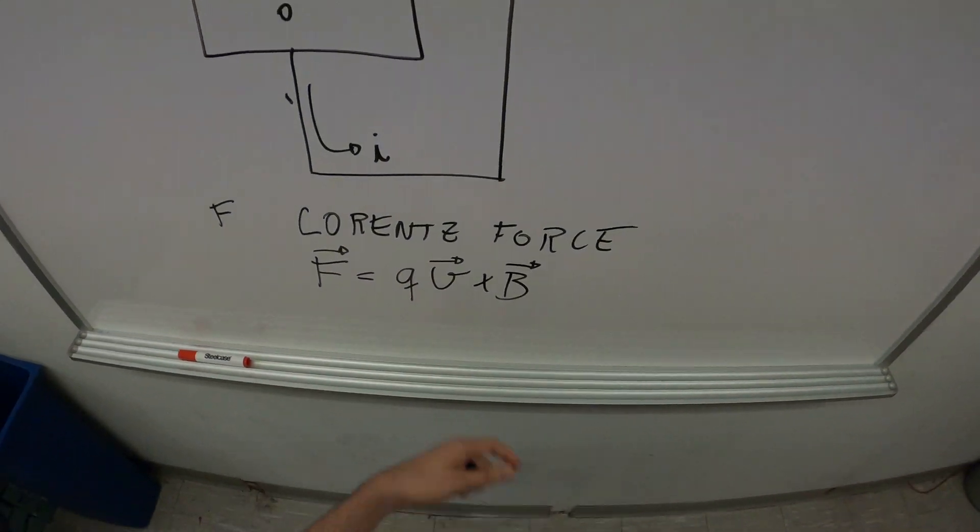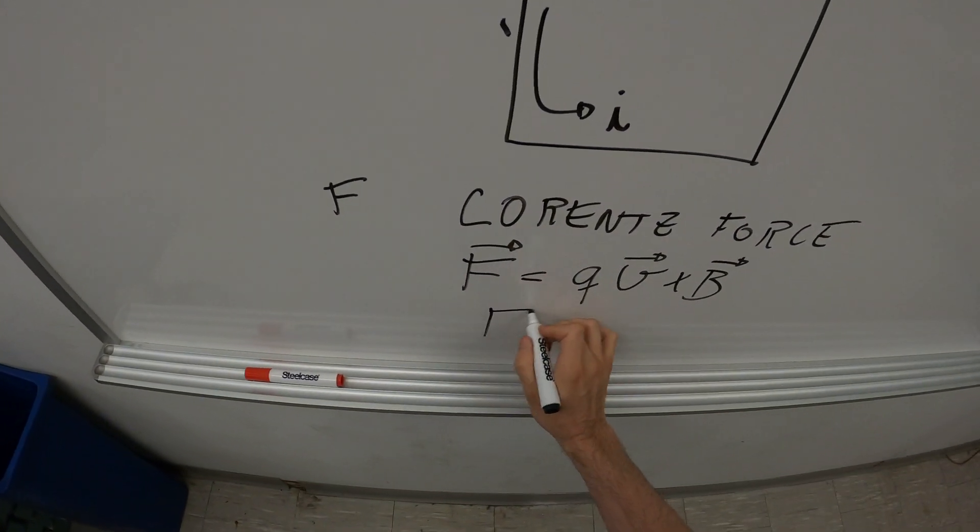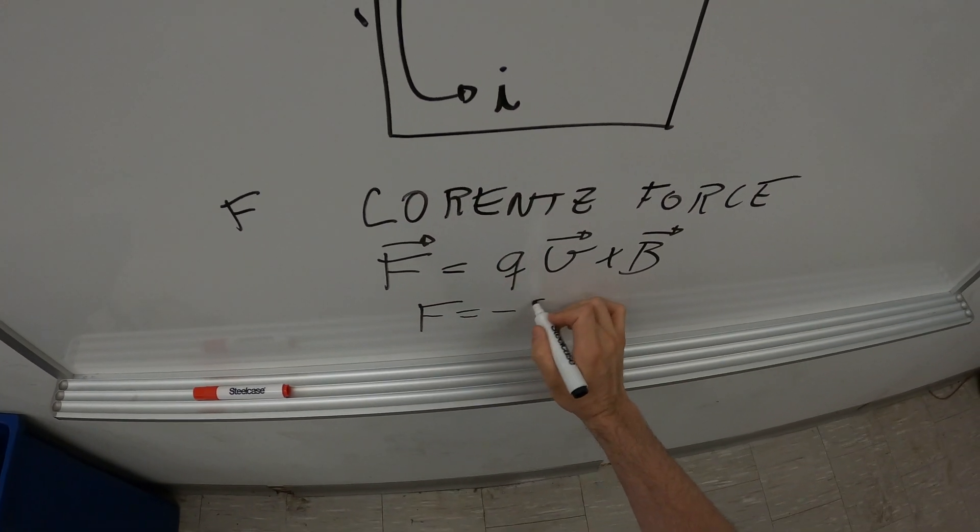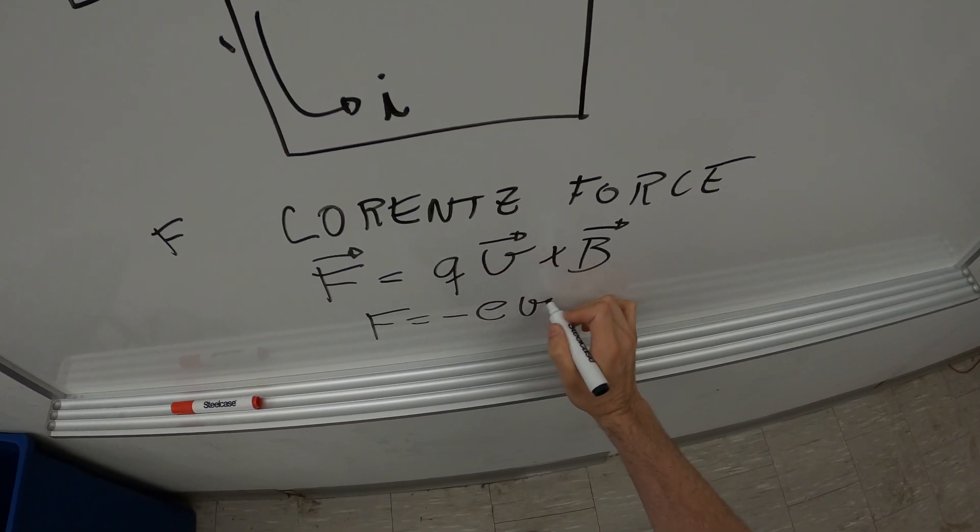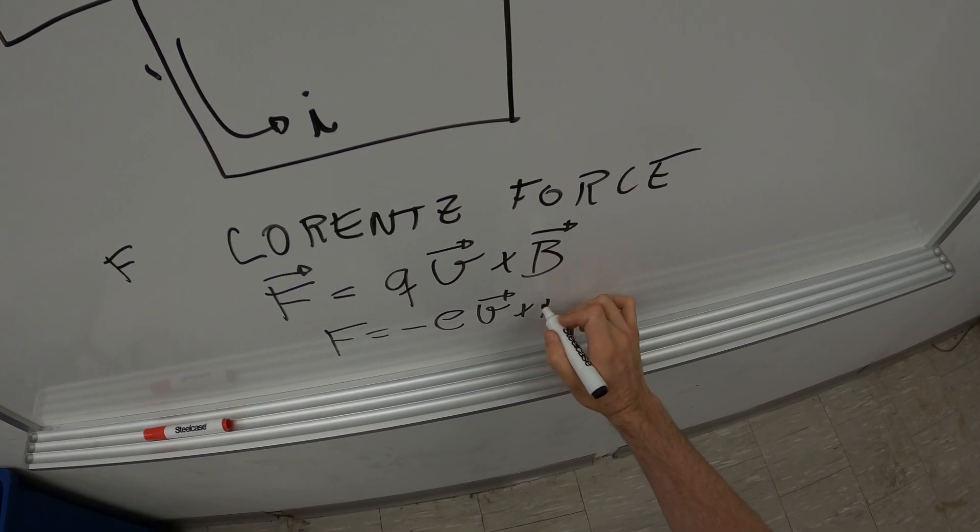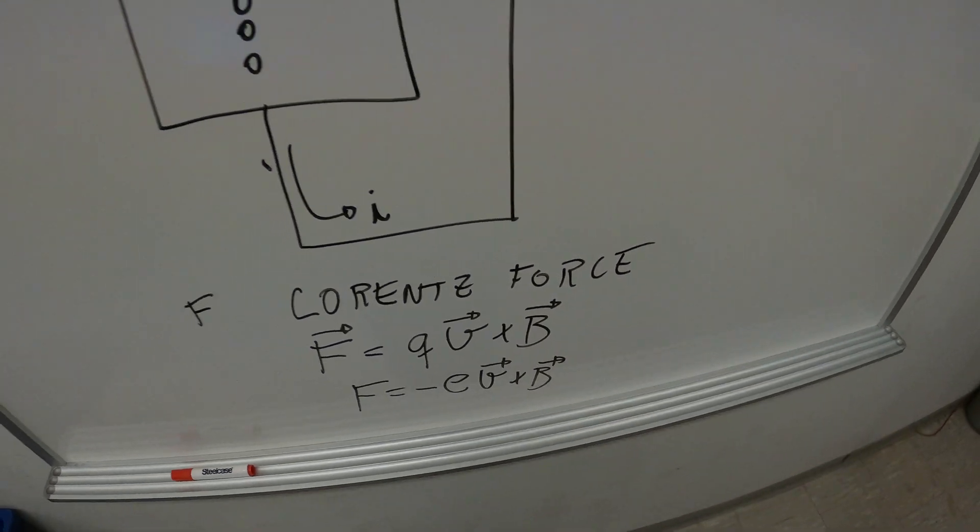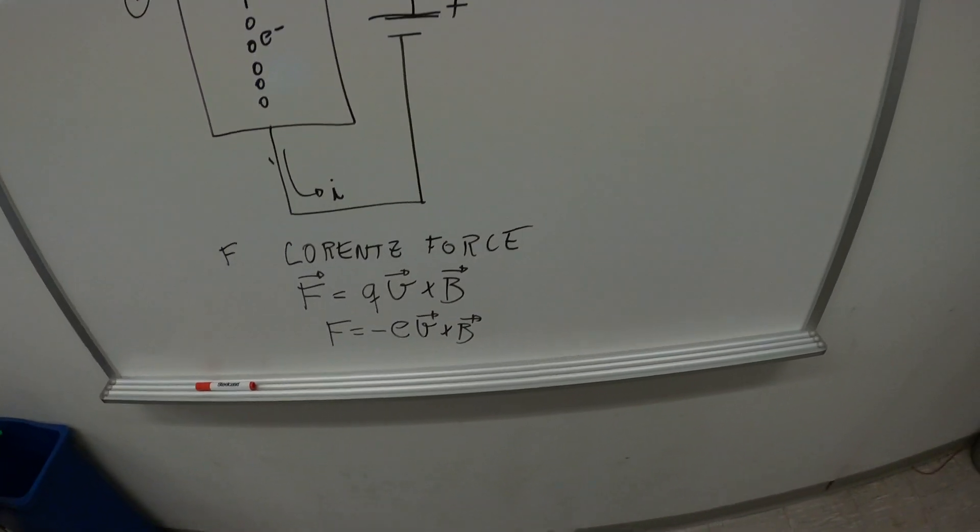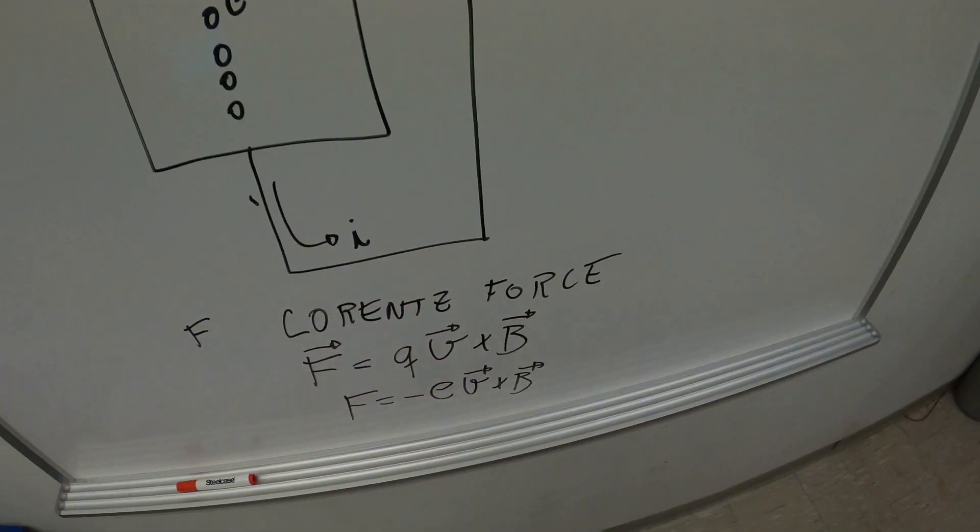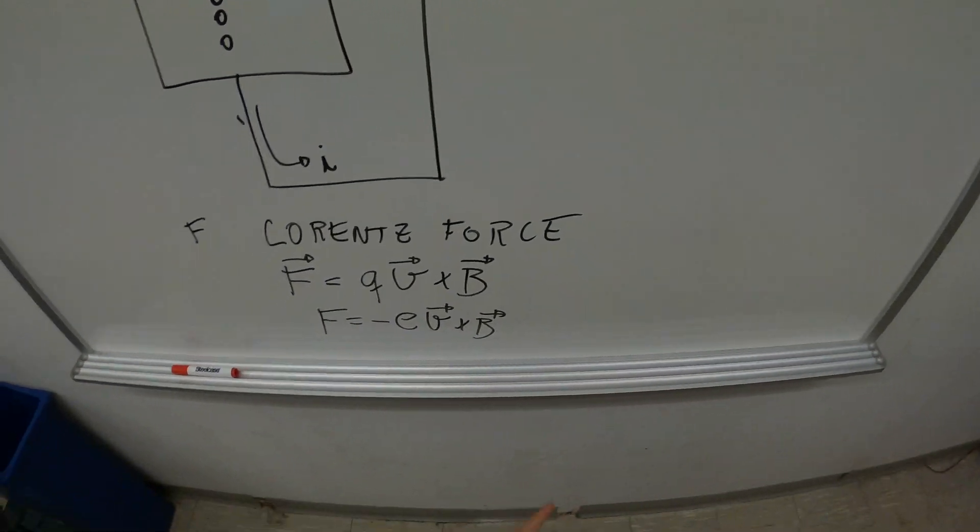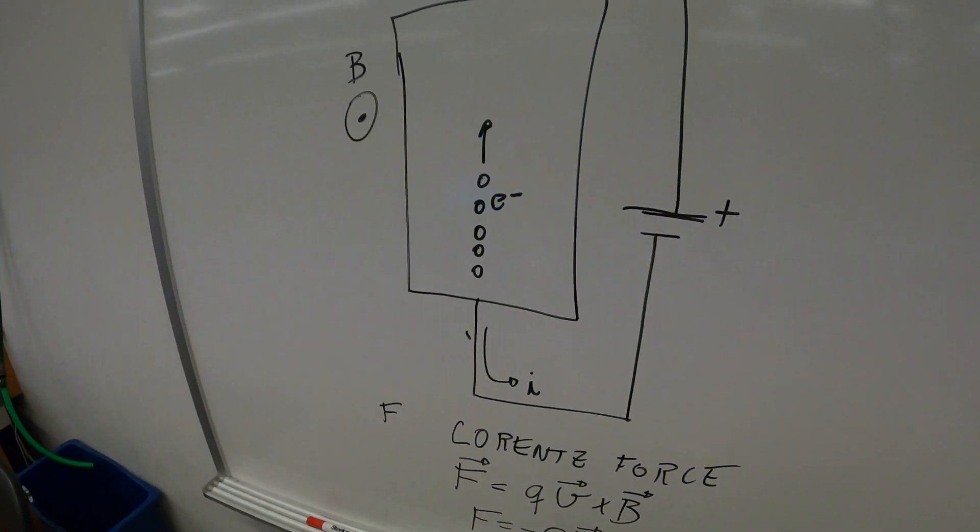Where Q is the charge. So for an electron the charge is minus E, the elementary charge, and this becomes a vectorial product between V, the velocity vector of the electrons, and the magnetic field.